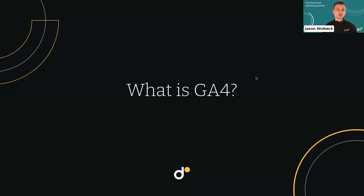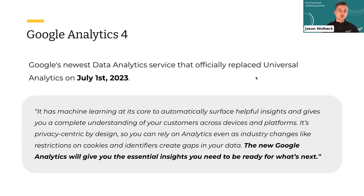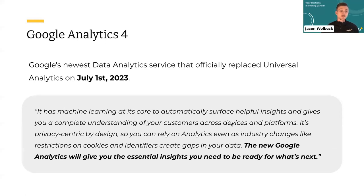To kick us off, it's always good to understand what GA4 is. If you're in the marketing world or have any piece of marketing or sales attribution, you're probably already aware. GA4 is Google's newest analytics software that's replaced what was called Universal Analytics, and that officially went into effect July 1st of this year. Google's quote from 2020 sums it up well: it has machine learning at its core to automatically surface helpful insights, gives you a complete understanding of your customers across devices and platforms, and it's privacy-centric by design.